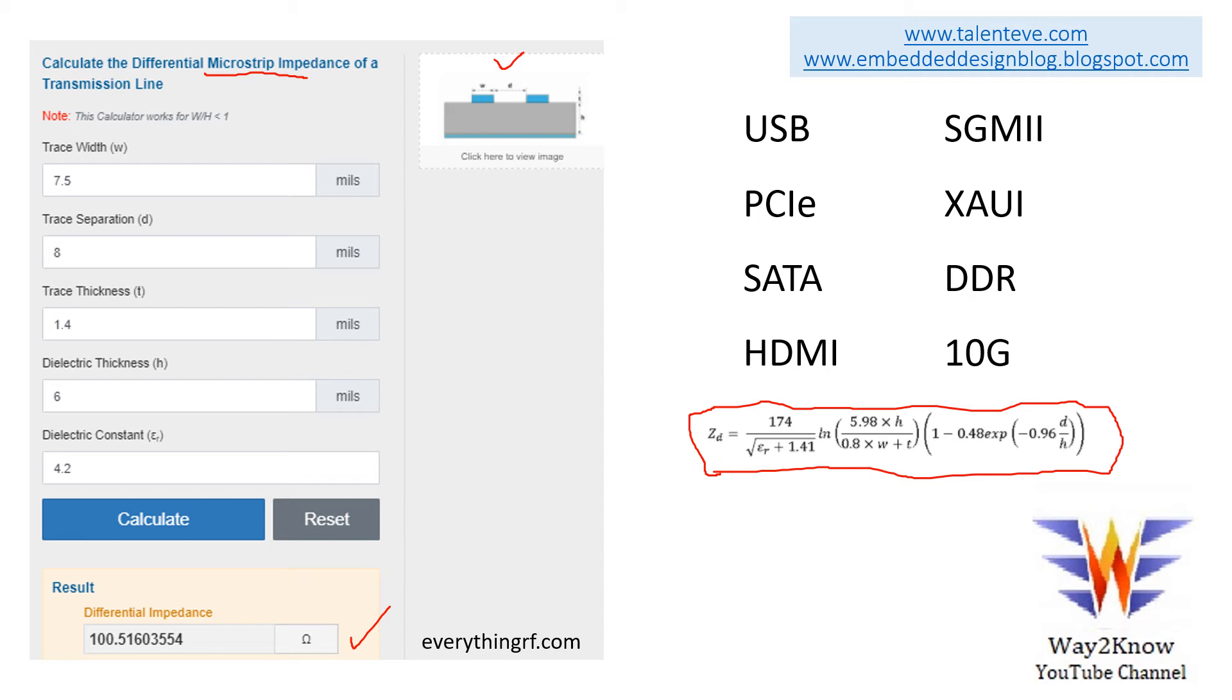If you use inner layer routing, you cannot use the same width and trace separation. There will be a separate calculator for strip line and you have to use that formula and come up with the impedance. Example, if we say 7.5 mil width here and 8 mil separation for the 100 ohm impedance on the top, if you route this to the inner layers, in order to maintain 100 ohms, you cannot use the same width as here. You have to recalculate the width for 100 ohms for a stripline configuration and then route. That means for a controlled impedance, there will be different trace widths associated between the top layer and the inner layers. We have to calculate accordingly.